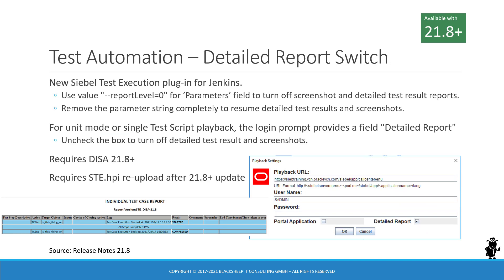Siebel test automation has undergone a significant but small change. There is a new test execution plugin — a new version of the ste.hpi plugin — delivered with the Siebel Server binaries. If you re-upload that plugin in your Jenkins instance, it now has a parameters field. The only parameter documented or supported at this point is report level. If you set report level to zero in the Jenkins run, instances must be updated to 21.8 to understand that parameter. A report will be significantly smaller, containing just a summary with no detailed steps, no detailed input values recorded, no detailed timings, and no screenshots provided.